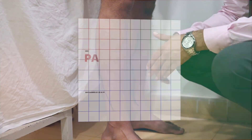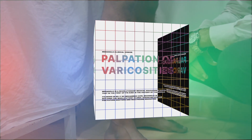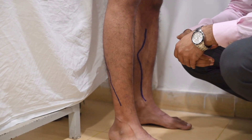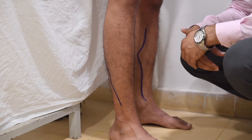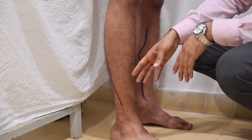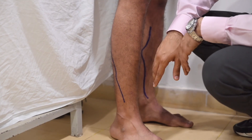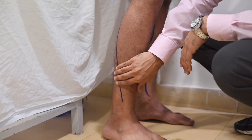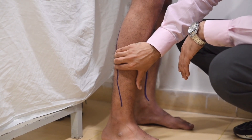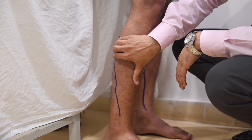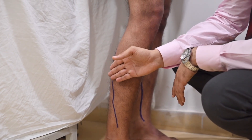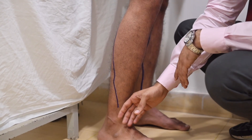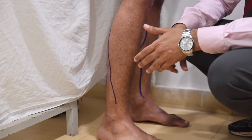We will palpate along any varicosities that are present to assess tenderness, to assess the hardness and firmness of the varicosity, and also palpate the skin for changes. We have drawn some varicosities here for examination purposes. We need to palpate along its length to see its tenderness, to see if it is cord-like in nature, and for temperature assessment we will use the back of our fingers.